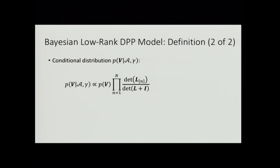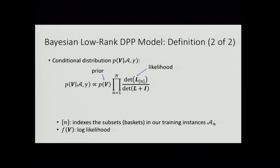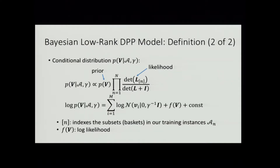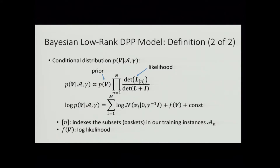Now let's look at learning the posterior — the conditional distribution on V given our training data (noted by calligraphic A) and our gamma parameter. Our prior on V is the multivariate Gaussian, and our likelihood is the same as the likelihood function used previously for the low-rank DPP. If we write this out, the log density turns out to be very similar to the log density seen earlier for the optimization-based low-rank DPP. The bracket N notation indexes the particular subsets or baskets in our data, and F of V is our log likelihood.